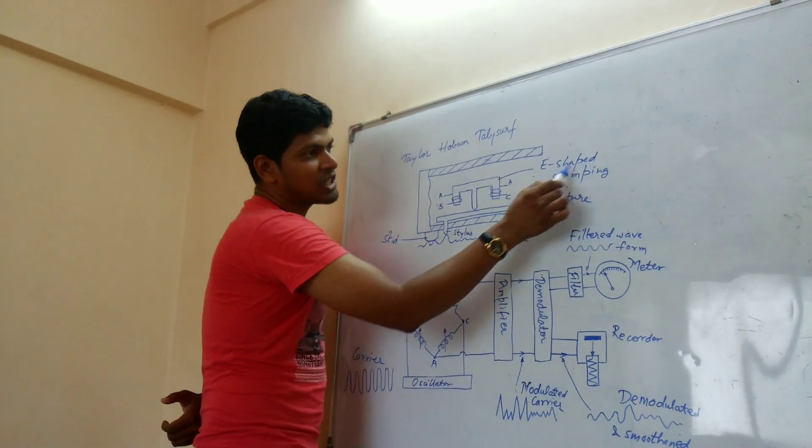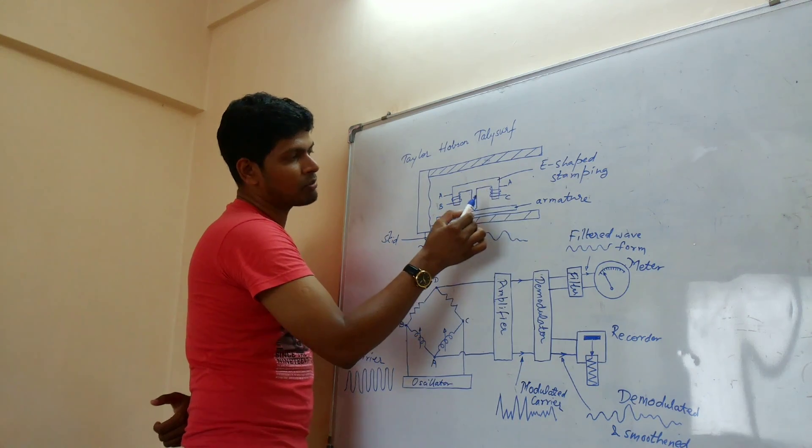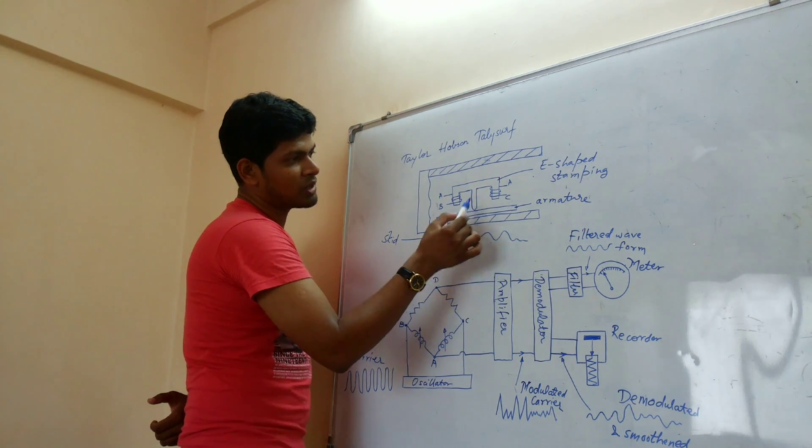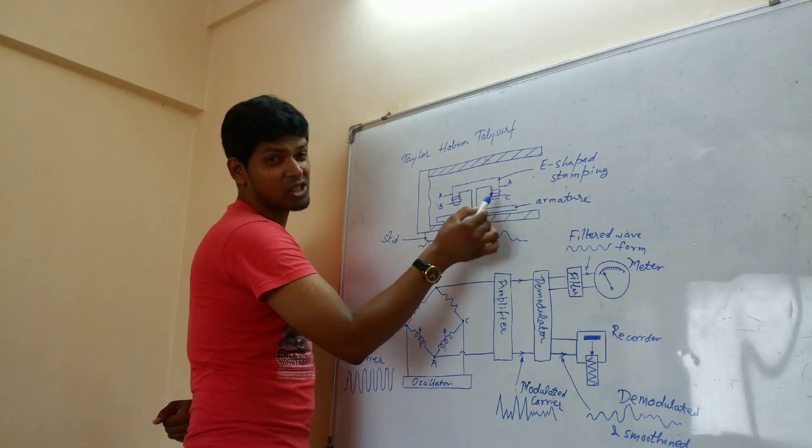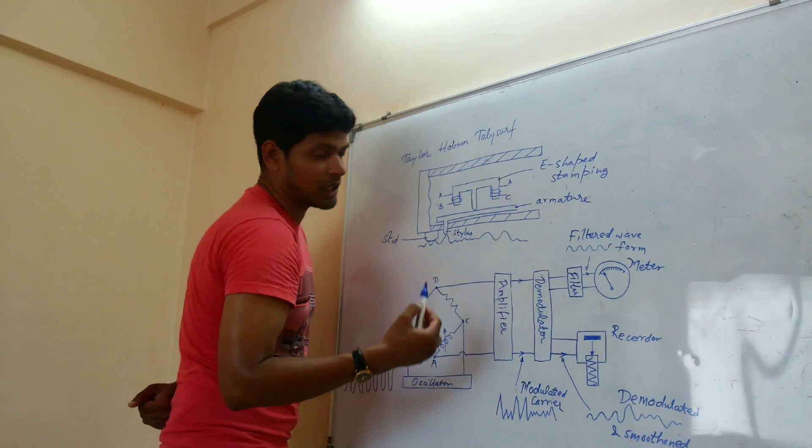On the E-shaped stamping, which has three arms. So one of the arms is pivoted or touched with the armature. And the two arms has the coil which carries the AC current.